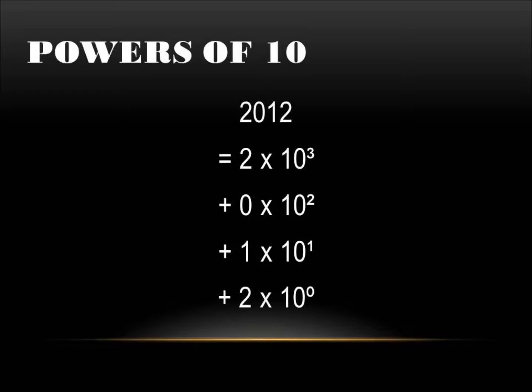This is an example of a base 10 system using the powers of 10. You will add them together, and this is standard notation expression. So with the number 2012, it would be 2 times 10 to the 0 power, plus 1 times 10 to the 1st power, plus 0 times 10 to the 2nd power, plus 2 times 10 to the 3rd power. You would add all that up, and you would come to 2012.